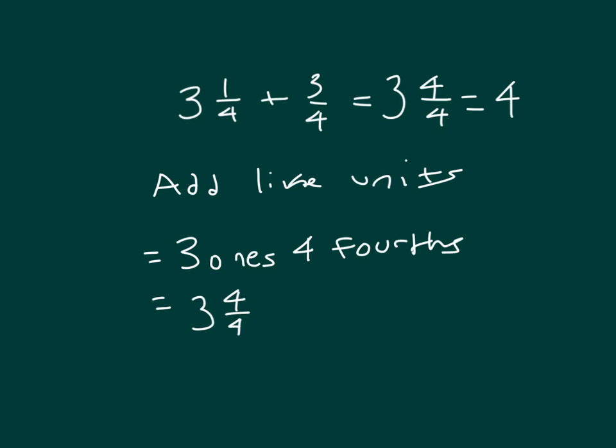3 and 1 fourth plus 3 fourths does equal 4. If we counted up 3 fourths from 3 and 1 fourth, it would be 3 and 2 fourths, 3 and 3 fourths, 3 and 4 fourths, which also equals 4.